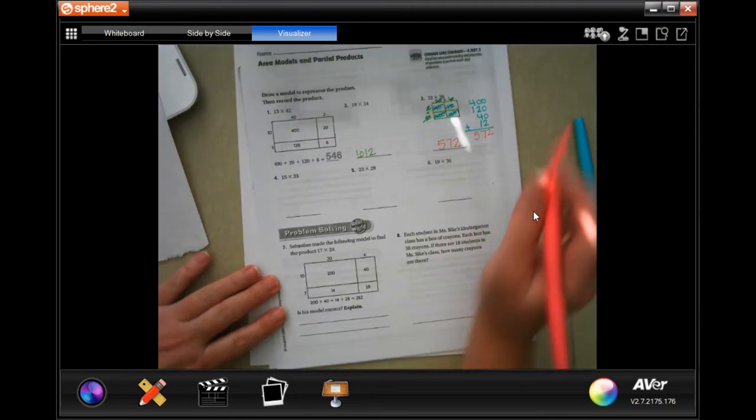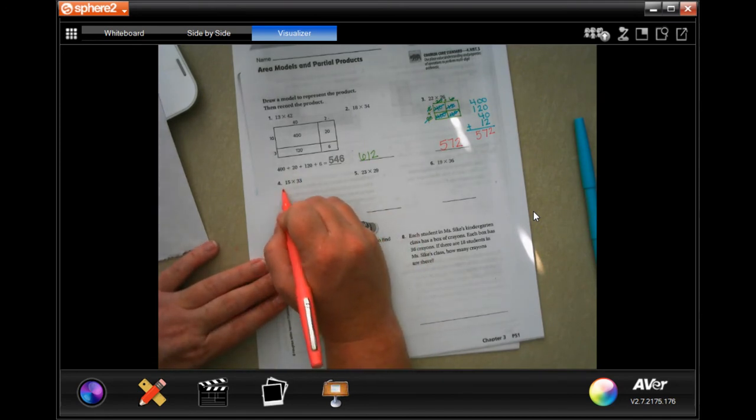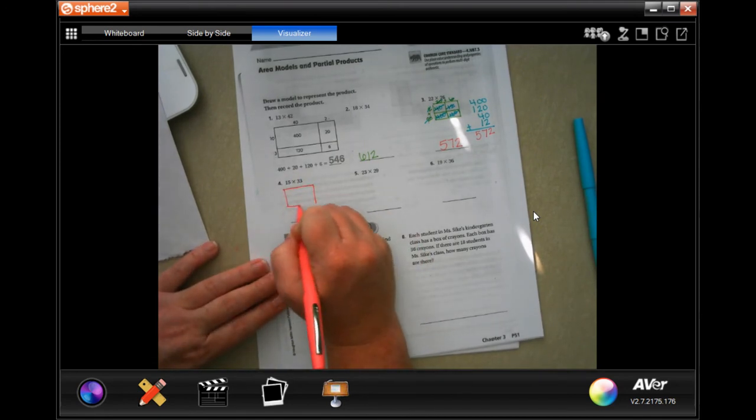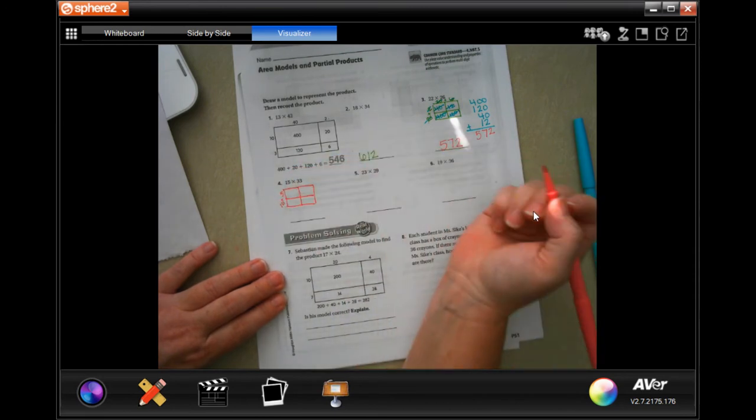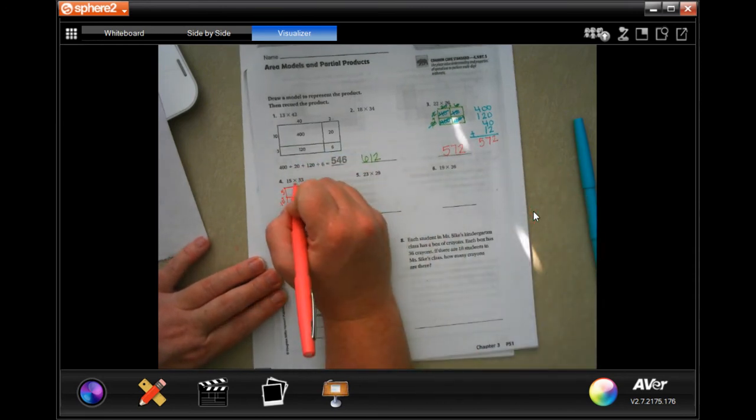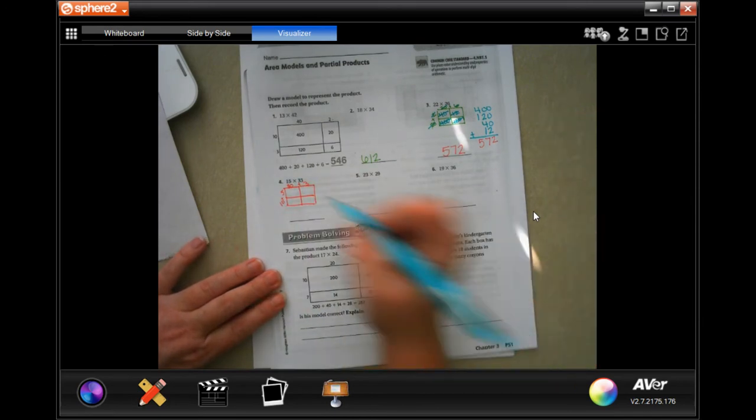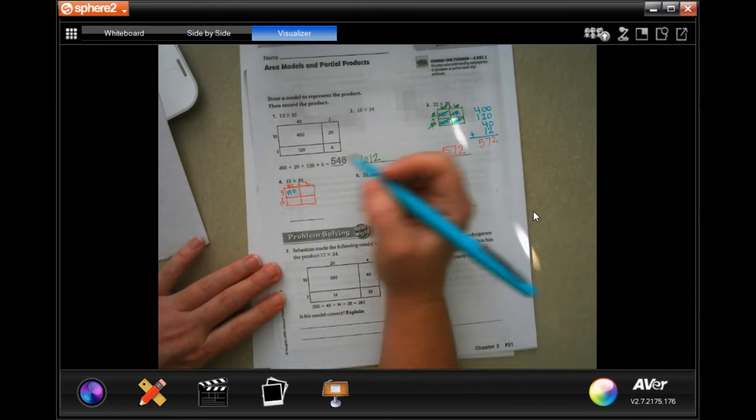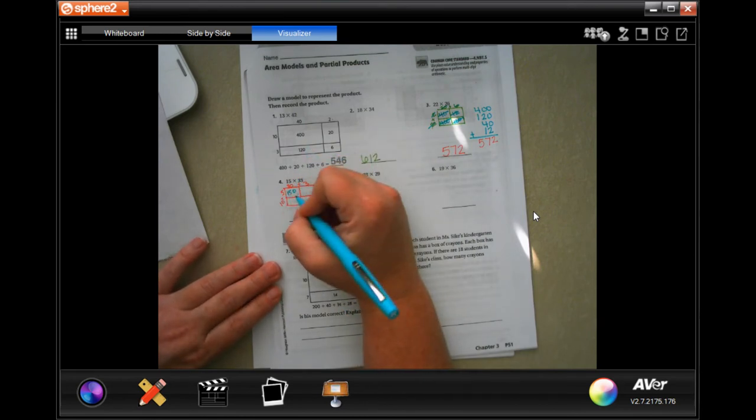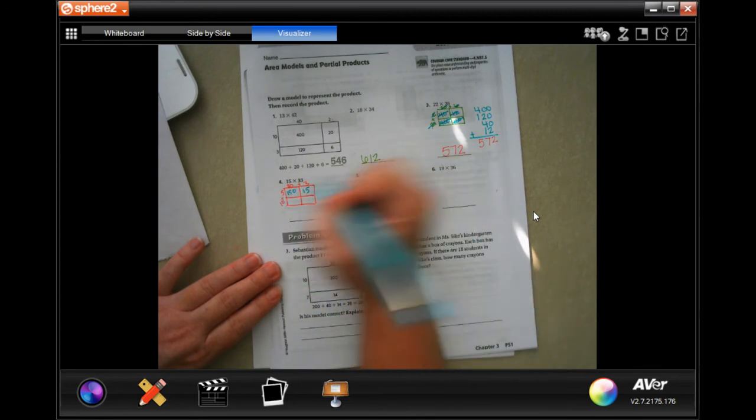We're going to do one more. So 15 is 10 plus 5. 33 is 30 plus 3. All right. So now 5 times 3 is 15 plus that zero there. Don't forget about it. And it doesn't matter which box you do first. So I can go 5 times 3 next. It's just 15. Now I'm done with my 5.